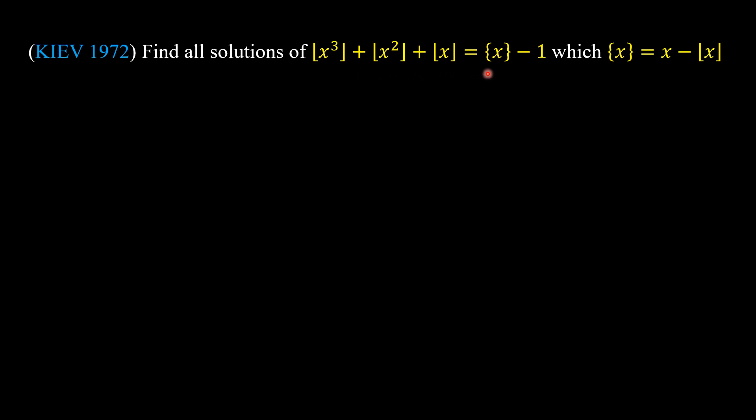Let's consider this equation. As we can see, the left-hand side of this equation is an integer, so the right-hand side should be an integer. Because -1 is an integer, then the fractional value of x must be an integer. But we already know that the fractional value of x is between 0 and 1.